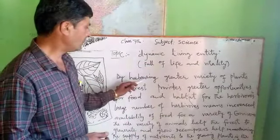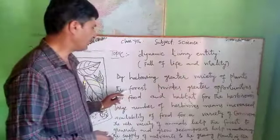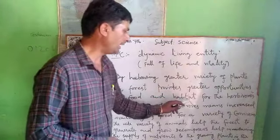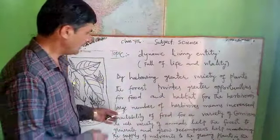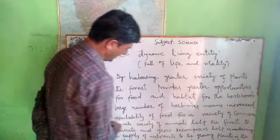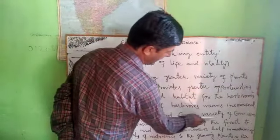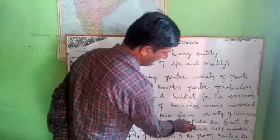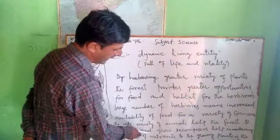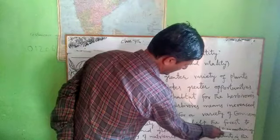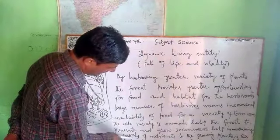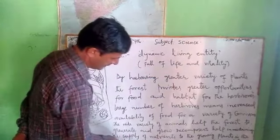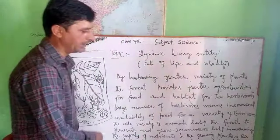By harboring greater variety of plants, the forest provides greater opportunities for food and habitat for the herbivores. Lowering number of herbivores means increasing availability of food for a variety of carnivores. The wide variety of animals help the forests to generate and grow. Decomposers help in maintaining the supply of nutrients to the growing plants in the forest. Therefore, the forest is a Dynamic Living Entity.